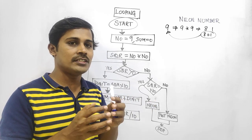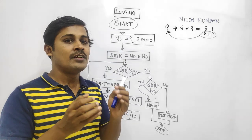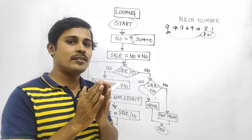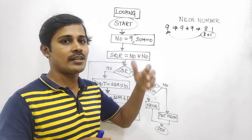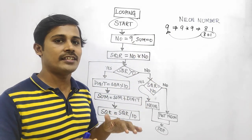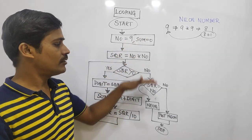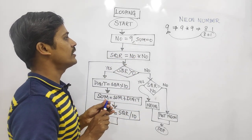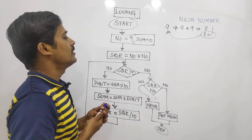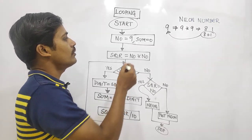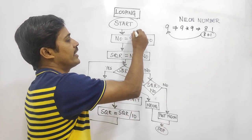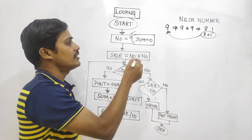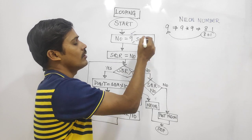We extract each digit one by one. We add each digit to get the sum. That is shown in the flowchart. We initialize the number — for example, 9 — and set sum to 0.